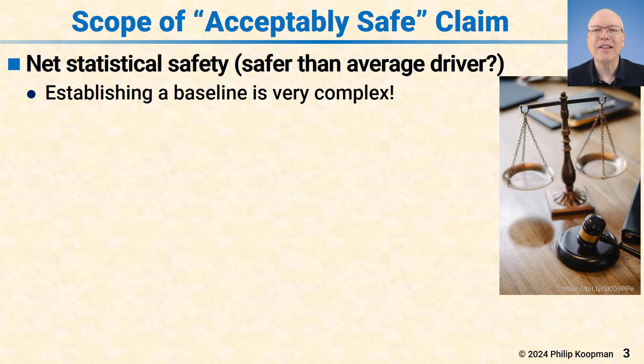The scope of an acceptably safe claim has to include several things. The most obvious thing is net statistical safety. For example, is your automated vehicle safer than an average driver?